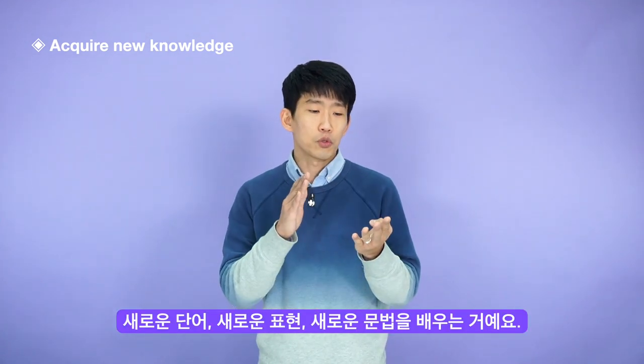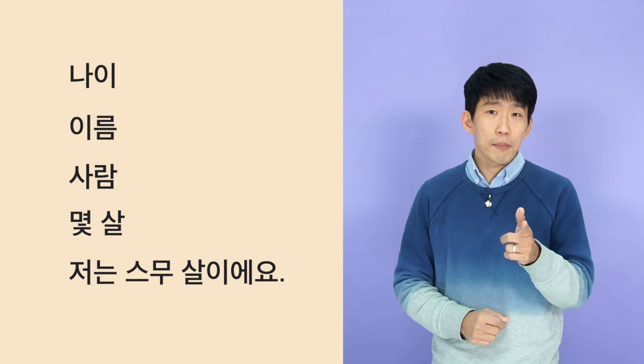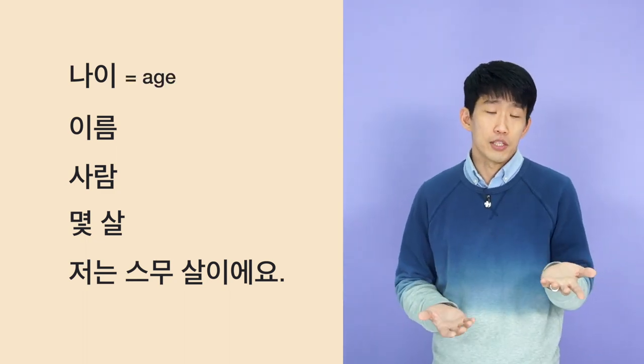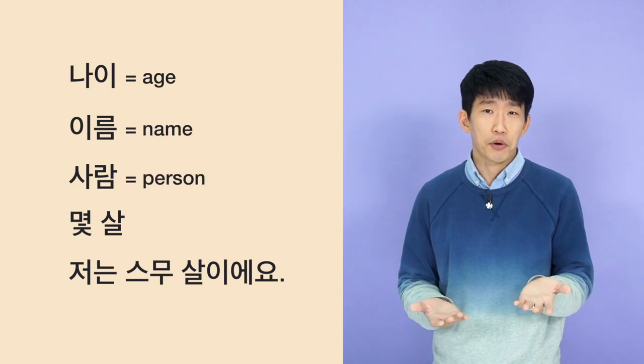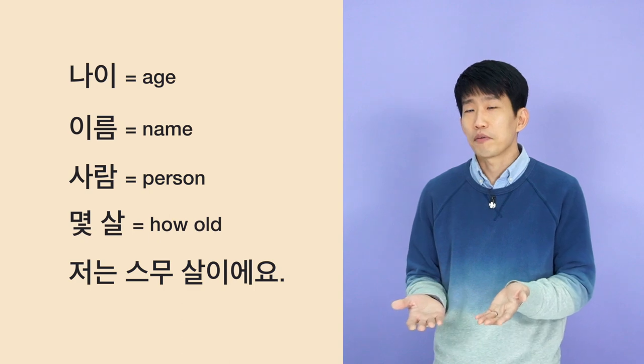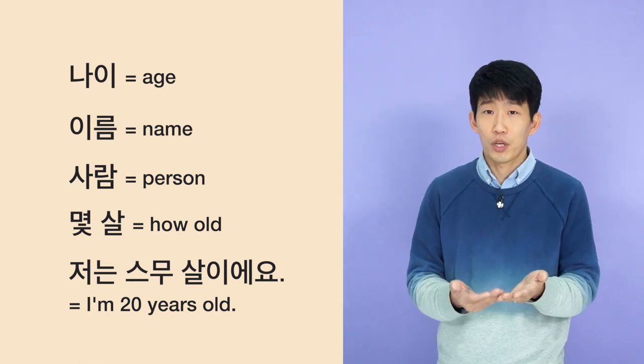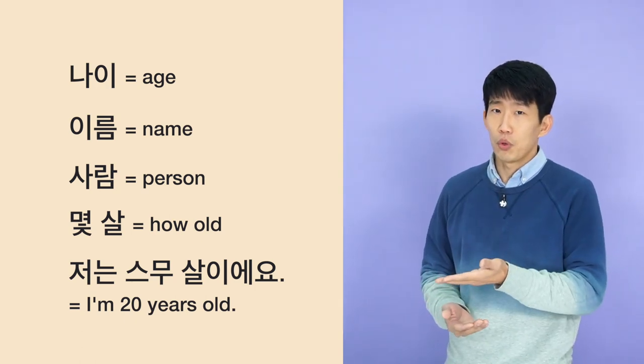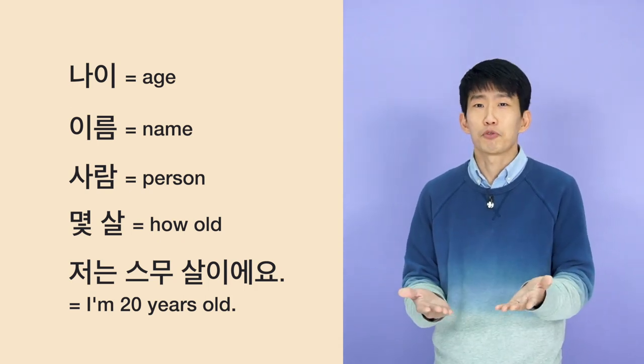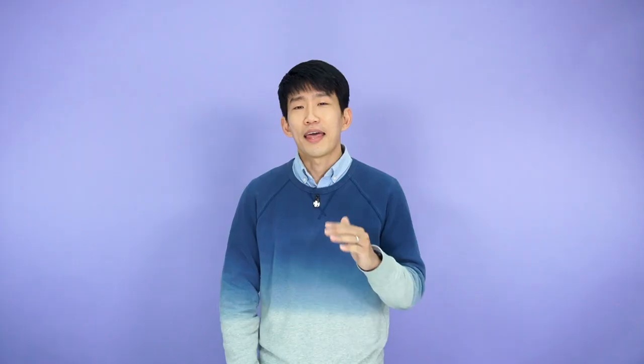The first key element of language learning is acquiring new knowledge — 새로운 단어, 새로운 표현, 새로운 문법을 배우는 거예요. You learn new words, phrases, pronunciation, and grammar so you can understand others and form your own sentences. For example, you learn: 나이 (age), 이름 (name), 사람 (person), 몇 살 (how old), 저는 스무살이에요 (I'm 20 years old). These words aren't necessarily connected at first, but knowing them is progress.